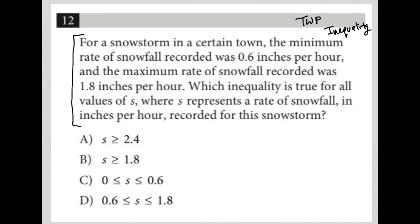So already I can say that the snowfall S was greater than or equal to 0.6, right? It didn't go less than 0.6 because 0.6 was the minimum, but it was less than or equal to 1.8. Again, it didn't go over 1.8 because 1.8 inches per hour is the maximum. So there's my inequality.